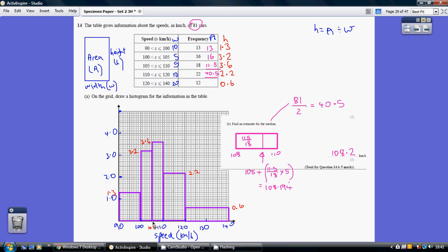Now I'm covering a base from 105 to 110. So that base length is 5, so the base of my rectangle is 5, and I want the fraction of 11.5 over 18 of that base, because I want the area that I have to be 11.5 over 18 of the area.